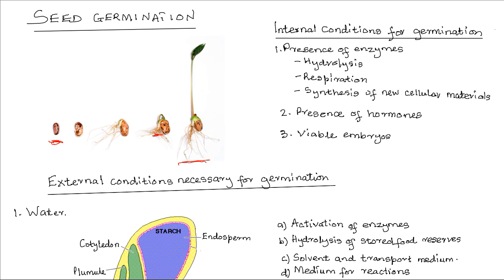There are certain conditions that are necessary for germination to take place. These are internal and external conditions. The internal conditions include, first, the presence of enzymes. Enzymes control many processes involved in germination, including hydrolysis of food reserves to provide nutrients for growth.